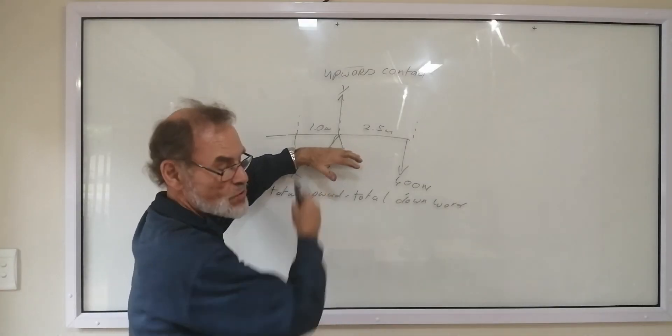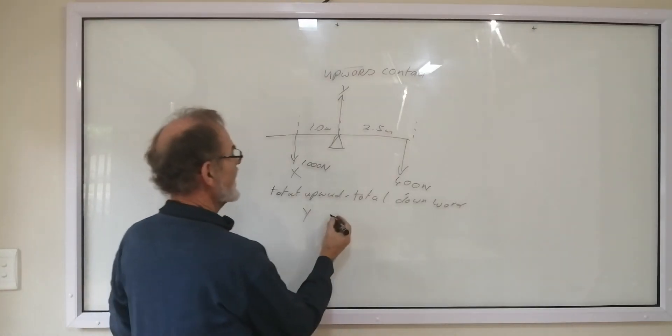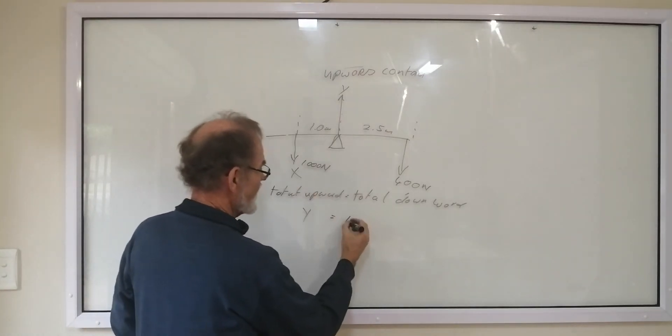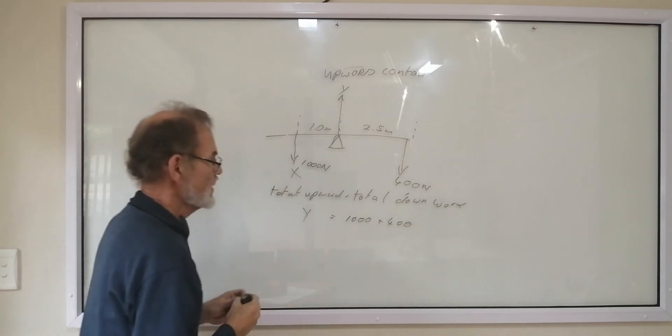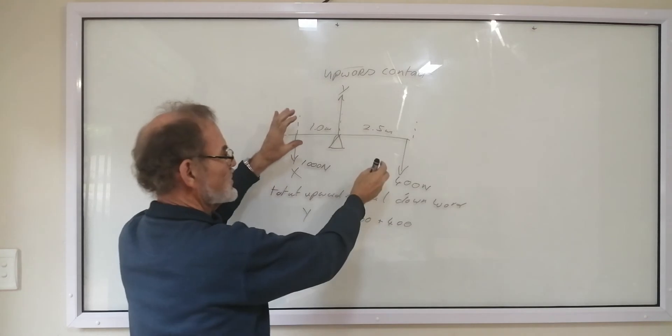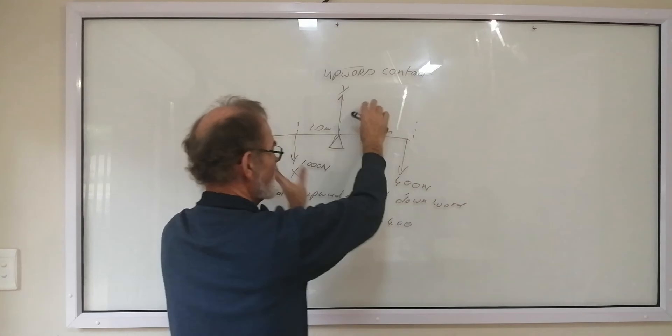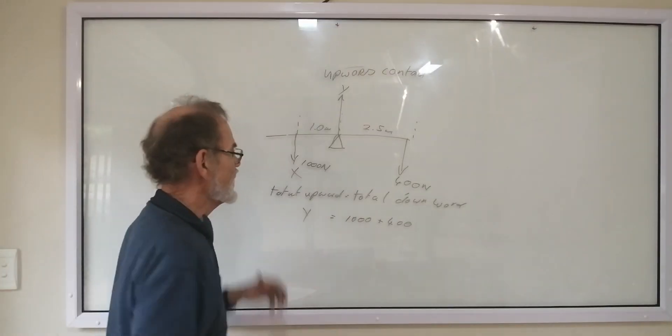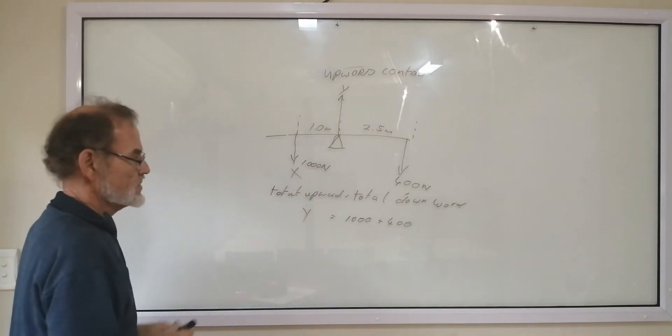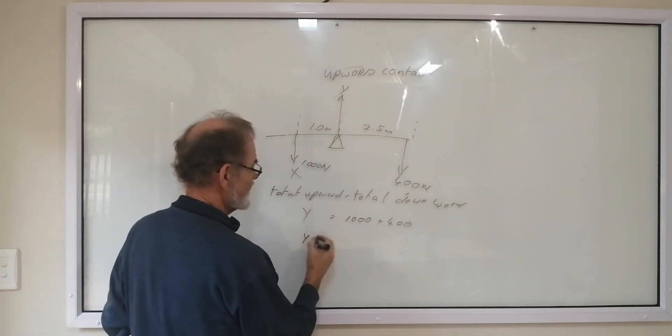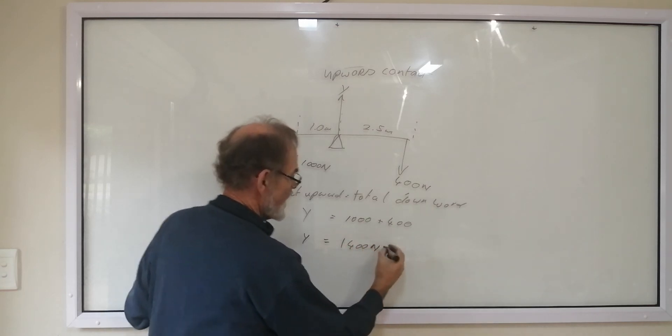Even if this was standing on the ground. If there was no force Y, this would be pressed through the ground. Y is equal to 1000 plus 400. Because we finished talking about equilibrium in the clockwise and anticlockwise moments. We're now talking about equilibrium in the up and down direction.